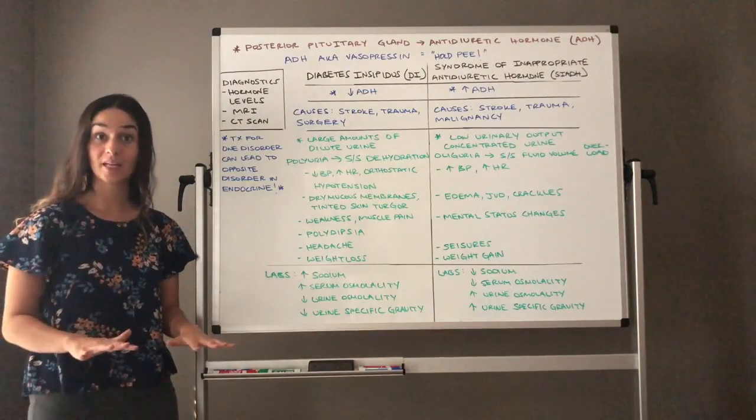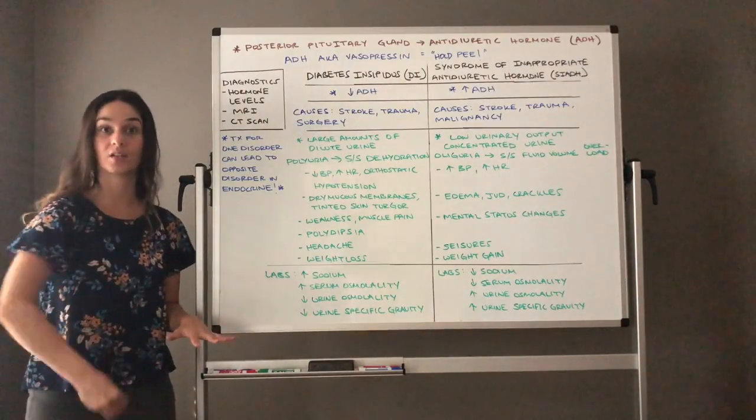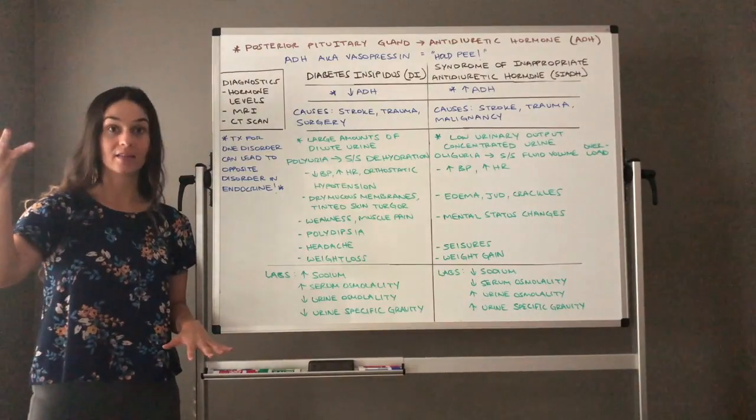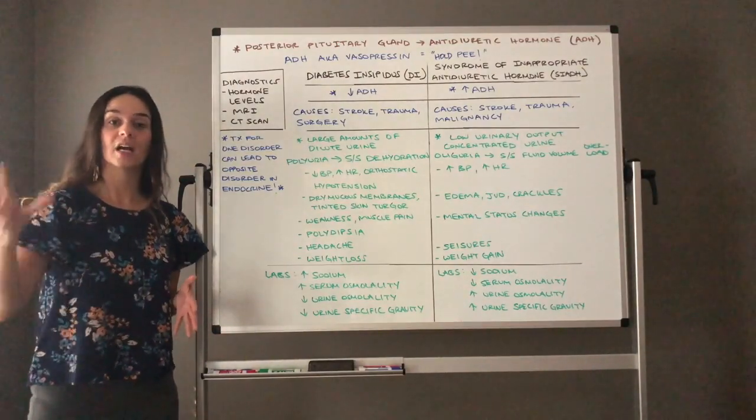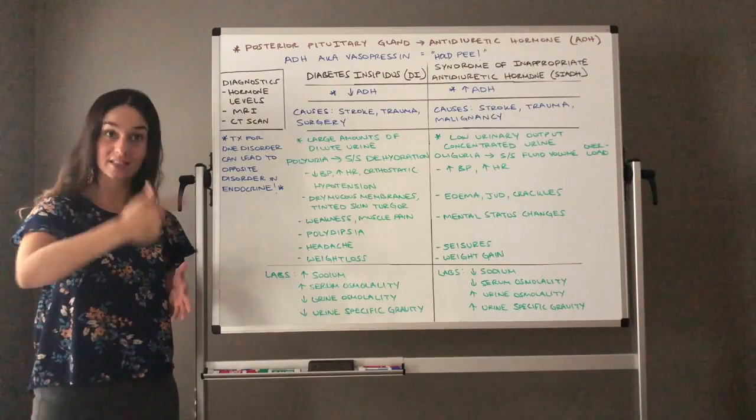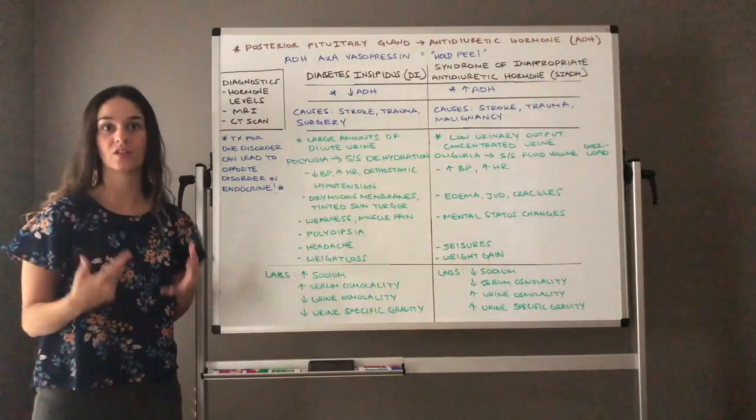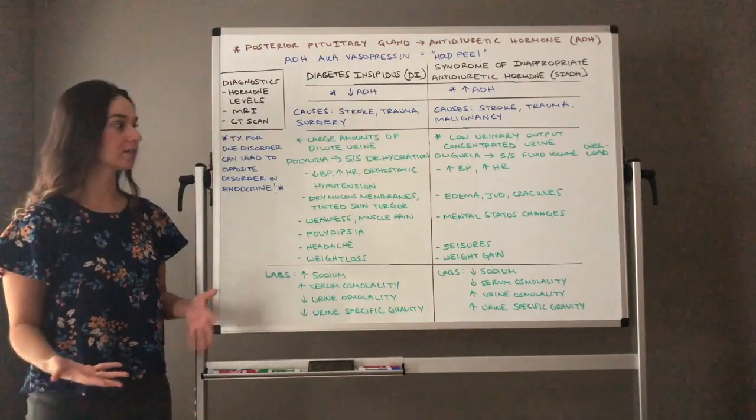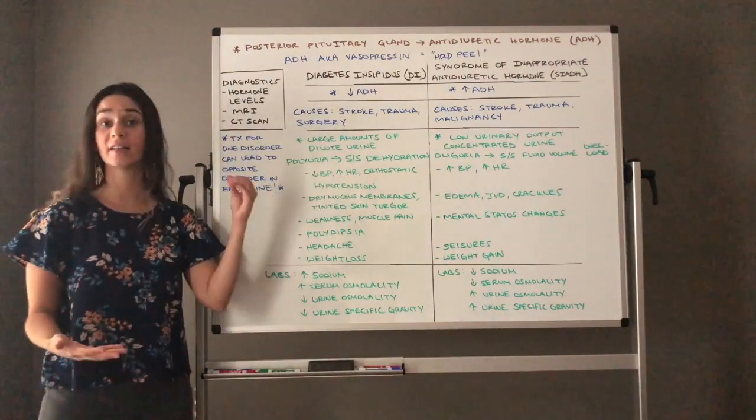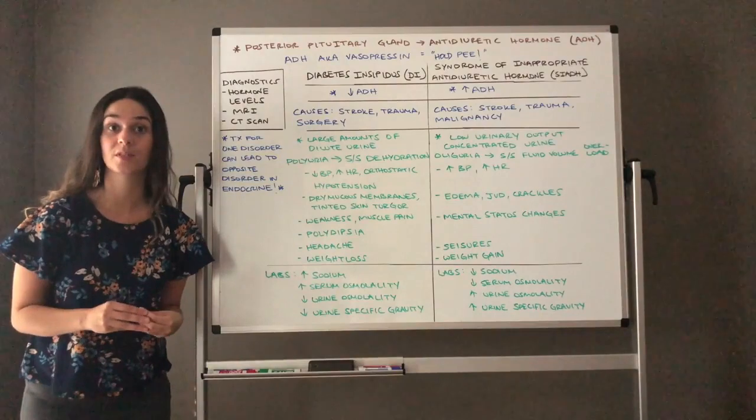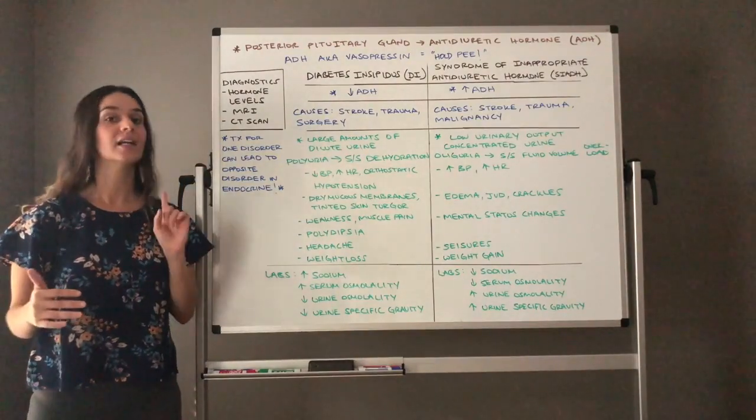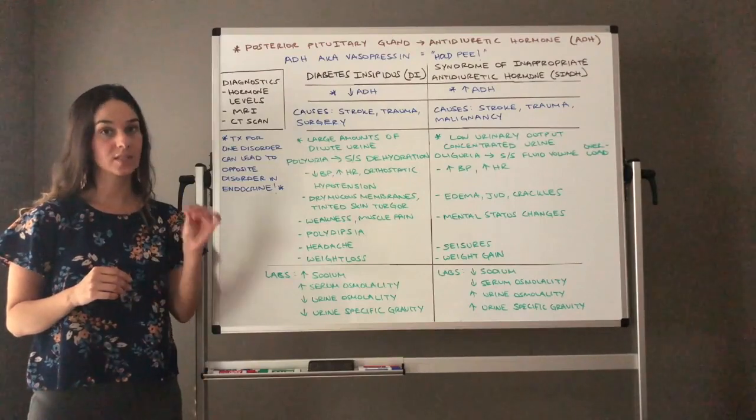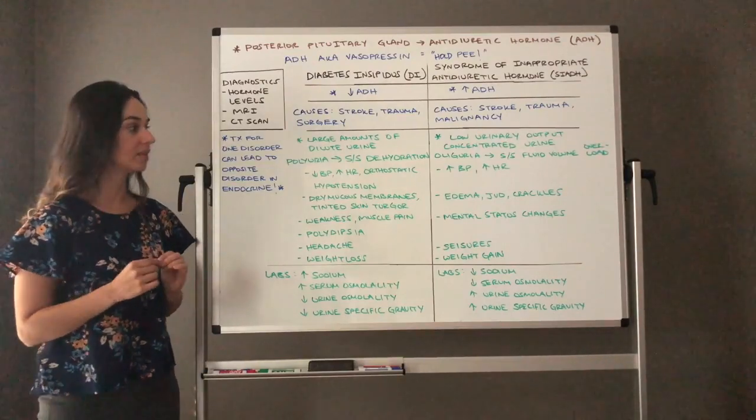So let's think about how a dehydrated client looks. Their blood pressure is low. They can be hypotensive because they're losing all that urine. Their heart rate is high. They're tachycardic because we now have low fluid volume and our heart is trying to pump that fluid that we still have in our body faster and faster to try to still perfuse our tissues, our organs. They can have problems with orthostatic hypotension. So when they change positions, their blood pressure can drop.